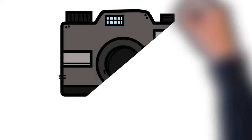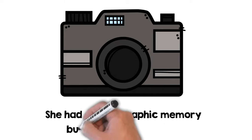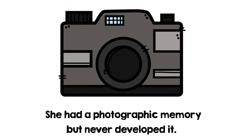Here is another example. She had a photographic memory but never developed it. A photographic memory is an unusual ability to remember things completely and exactly as they were seen. Develop can mean to make a photograph from film, or to gradually begin to have something. The pun takes the words photographic and developed, which are both associated with film, and surprises the listener by using a different meaning of each word.